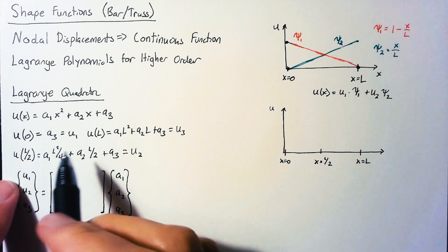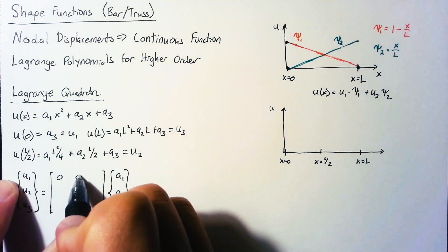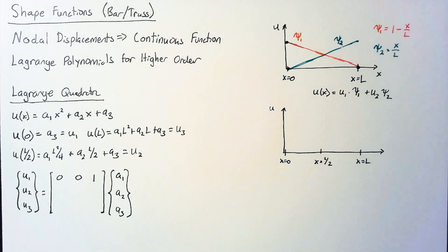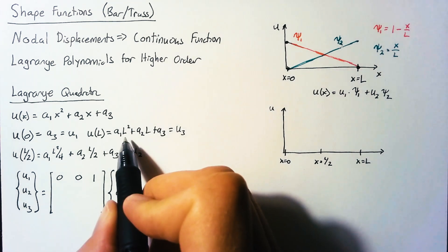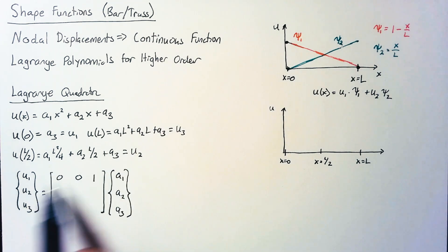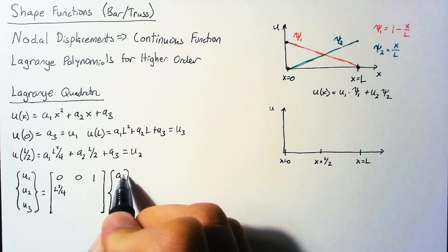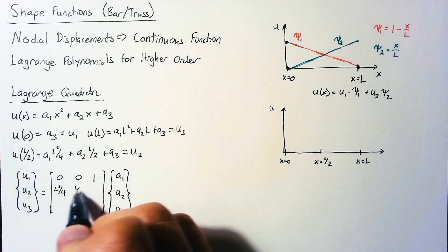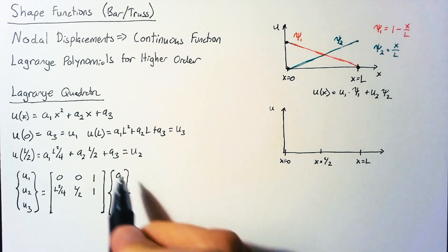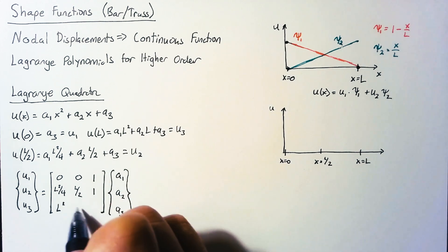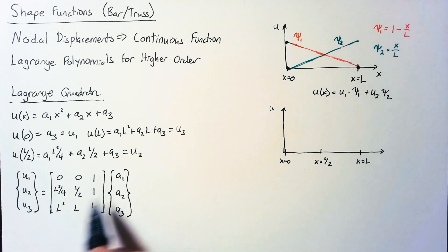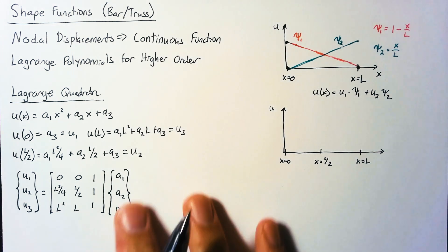Our first equation says that u1 is equal to a3, so these first two values are 0, and then we have a 1. Then we have u2 is equal to l squared over 4 times a1 plus l over 2 times a2 plus 1 times a3. And then finally, we have l squared, l, and 1 for our final row. With these values, we can solve for our a's.